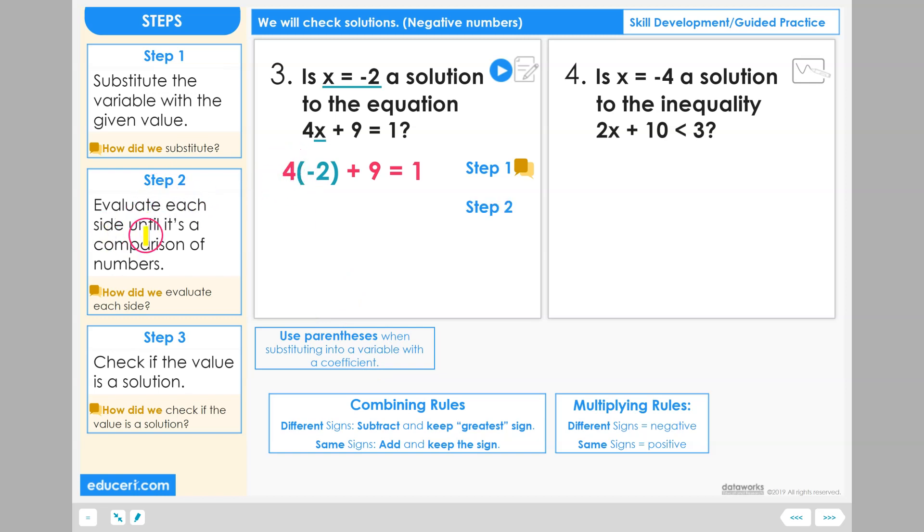Step 2: Evaluate each side until it's a comparison of numbers. So over here on the left side, we'll start by multiplying before we add the 9. Multiplying positive 4 times negative 2 is going to be negative 8. We're multiplying positive times negative, so it's going to be a negative 8.